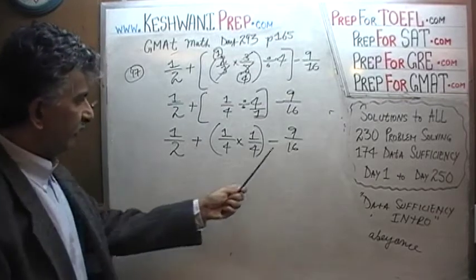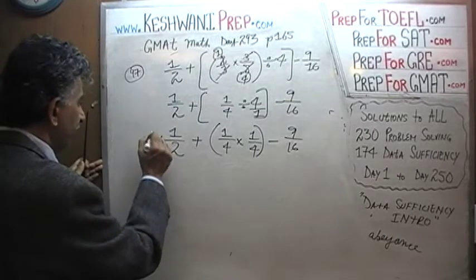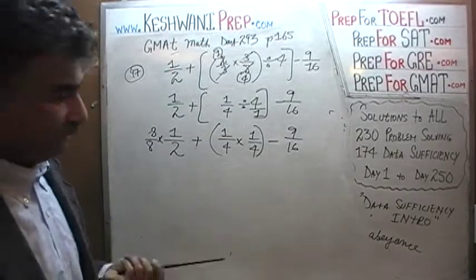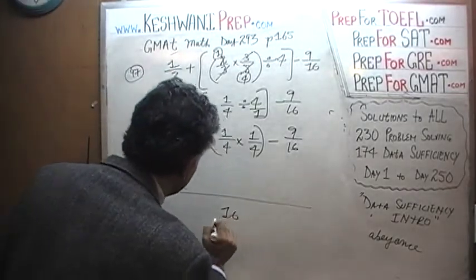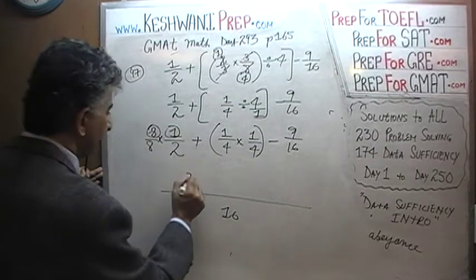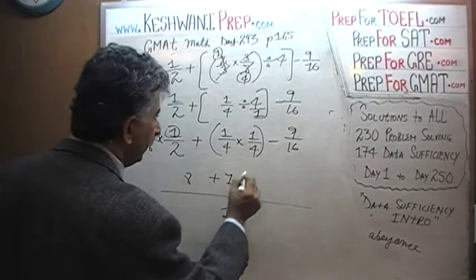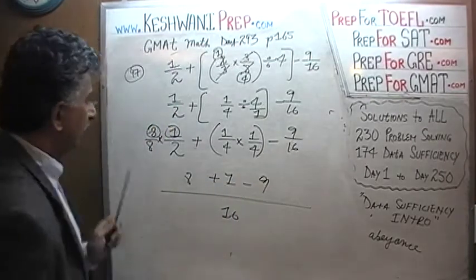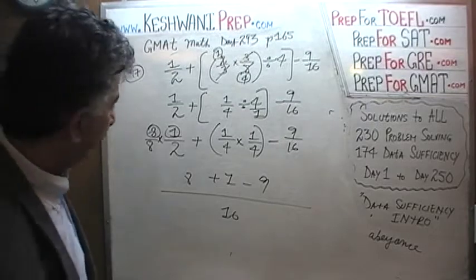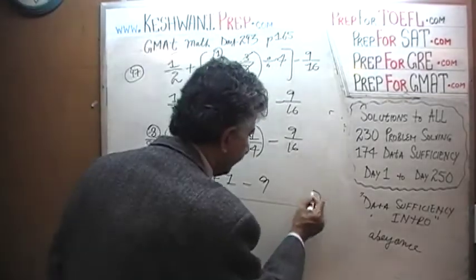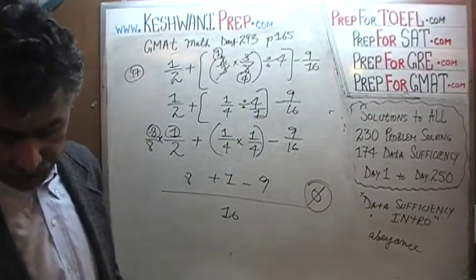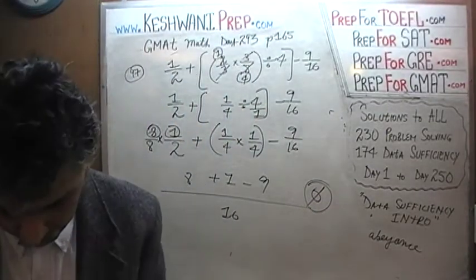So now we can take the common denominator. This is 16, this is 16, let's make this 16, let's multiply this top and bottom by 8. So now everybody has a denominator of 16 and we are done. The common denominator is 16 because 8 times 2 is 16 and on the top we get 8 times 1 which is 8. Here we have 1 times 1 which is 1 and here we have 9. Oh it is 0, the answer is 0. 8 plus 1 is 9 and the answer is 0. Big fat 0 is the final answer, the answer is E. Let's go on to the next one, the very last one on the page, number 98.